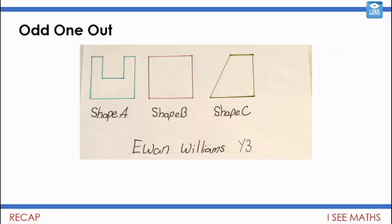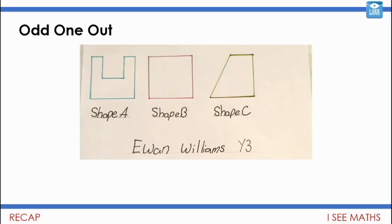And let's have a look at this one — Ewan's examples. Love these examples. Pause the video — how could each shape be the odd one out? Well Ewan, I'm gonna tell you what I went for. Shape A could be the odd one out because it's an octagon — it's got eight sides. The other shapes are quadrilaterals, they've got four sides.